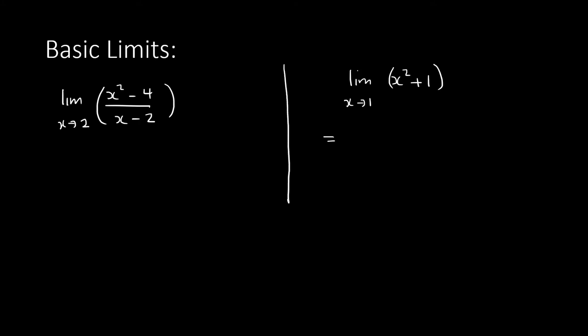When you have a limit, you want to find out what the value is as x approaches 1. So you substitute 1 directly into your expression: 1² + 1 = 2. That's your answer. When you write the answer, you don't include the limit notation anymore because you've already substituted.